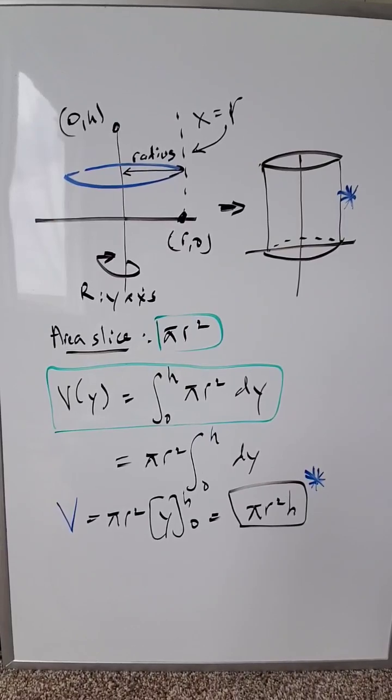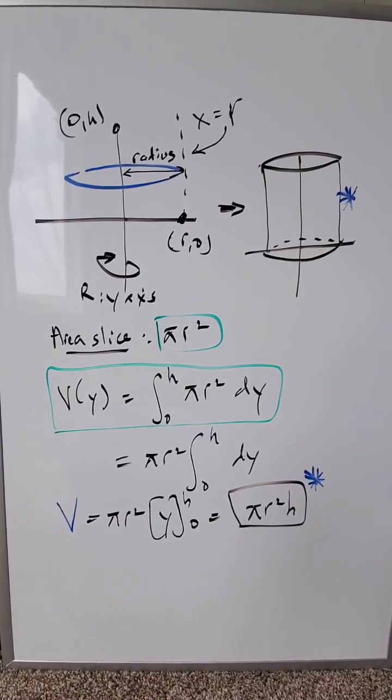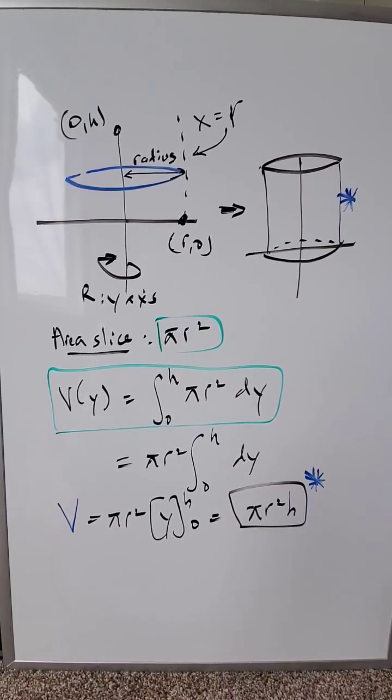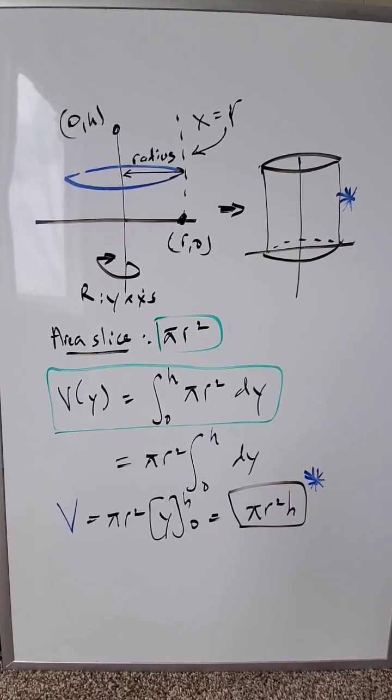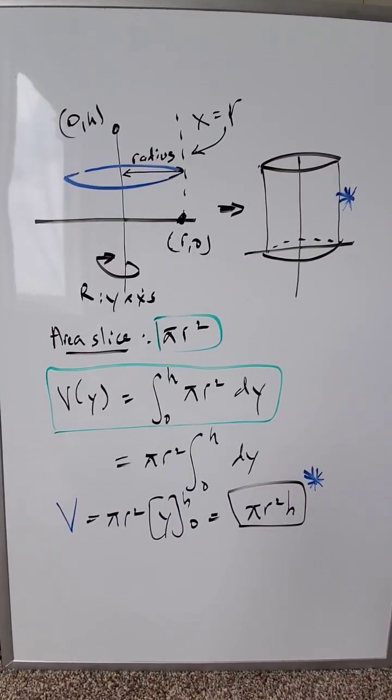You can see the area of each cross-sectional slice is pi r squared. You integrate this pi r squared, the slice from a lower limit 0 up to an upper limit h, with regards to dy.